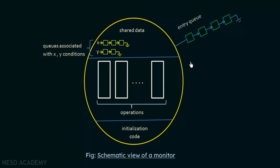With semaphores, a semaphore variable is modified by different processes and each process must correctly execute wait and signal — mistakes lead to deadlocks, timing errors, and other problems. With monitors, all main operations are done within the monitor itself, so process design doesn't need to worry as much. Processes access shared data via the monitor, solving those semaphore problems. Monitors are a high-level abstract data type and are much better than semaphores.